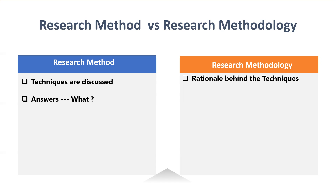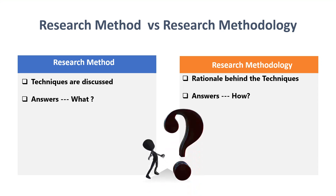Research method answers the question of what has to be done in the entire research work. Whereas research methodology explains how we are going to do the implementation using the algorithms described in the work to reach the solution. In short, research method tells about what you are going to do, and research methodology tells us how we are going to do it.